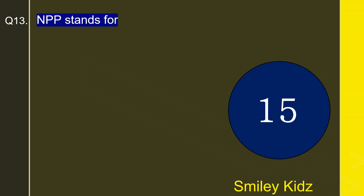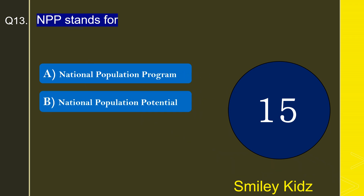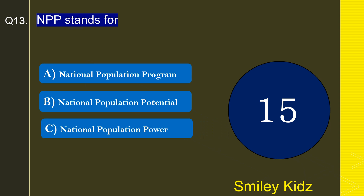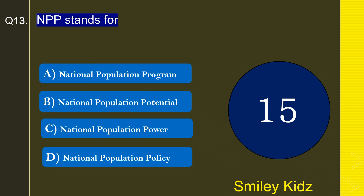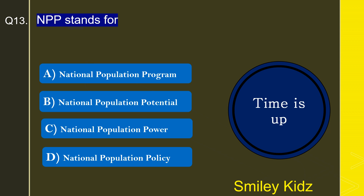Moving to question number 13: NPP stands for — National Population Programme, National Population Potential, National Population Power, or National Population Policy? The correct answer is National Population Policy. NPP stands for National Population Policy.